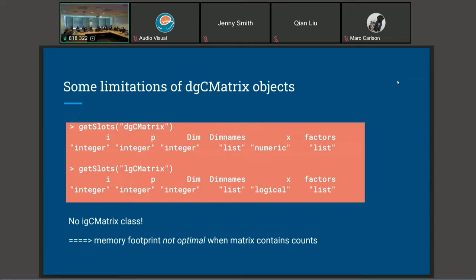I'm showing some details about the internal representation of those objects. dgcMatrix has some sibling classes. The d in dgcMatrix stands for double, so it tells us that the non-zero values are stored as double. There is also this lgcMatrix class where the non-zero values are stored in a logical vector, but there is no igcMatrix class. So if you want to store counts, which are typically integer values, we have to use the dgcMatrix representation.